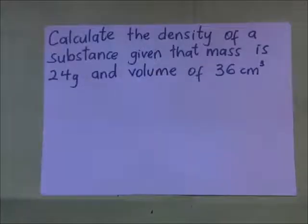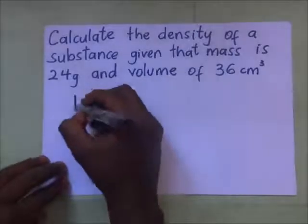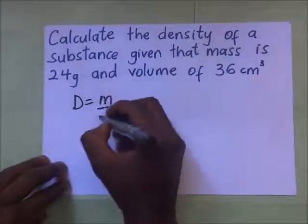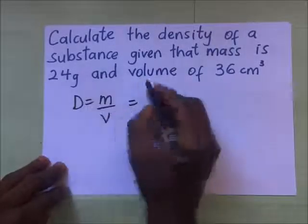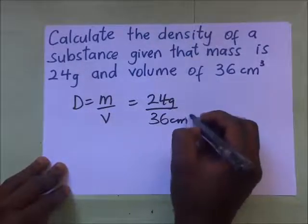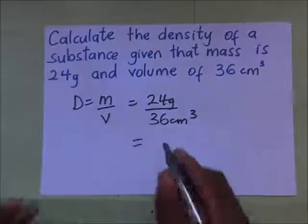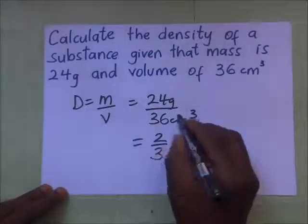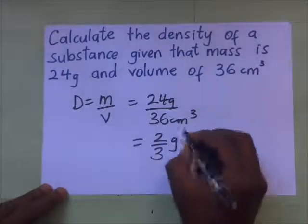Calculate the density of the substance, given that the mass is 24 grams and the volume is 36. Density is going to be mass over volume. That's 24 grams over 36 centimeters cubed. So this is going to be 2/3 grams per centimeters cubed.